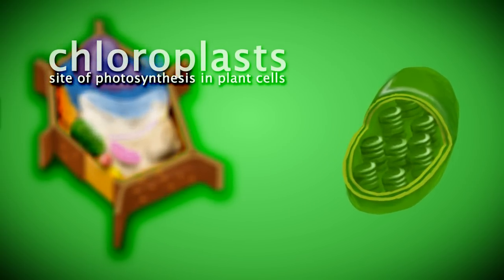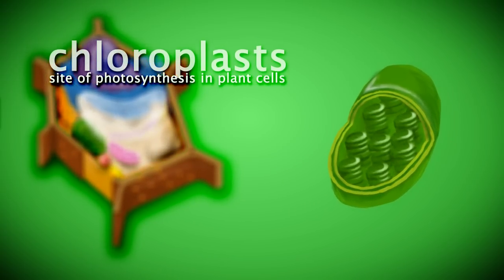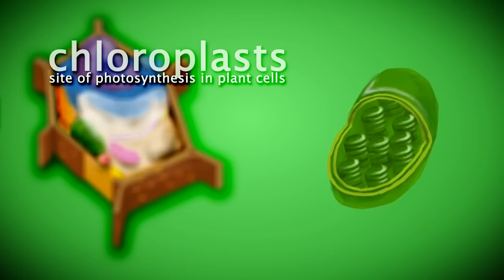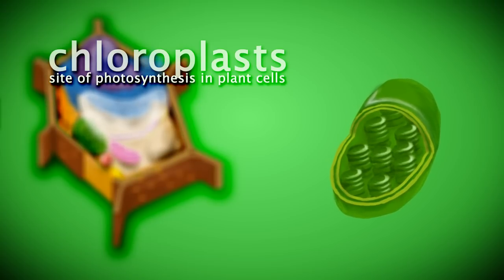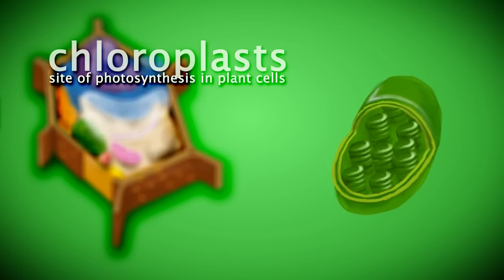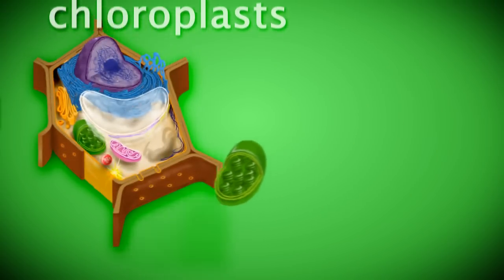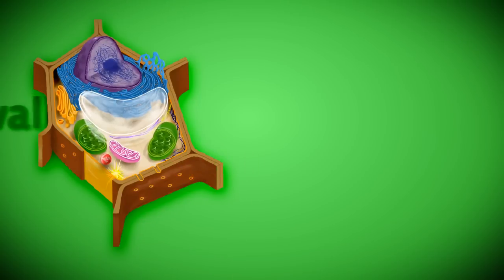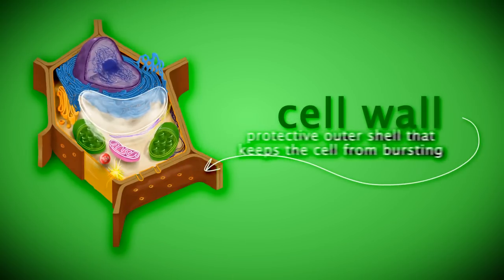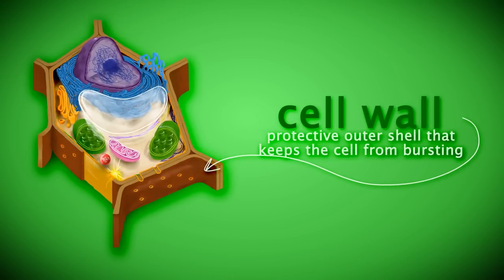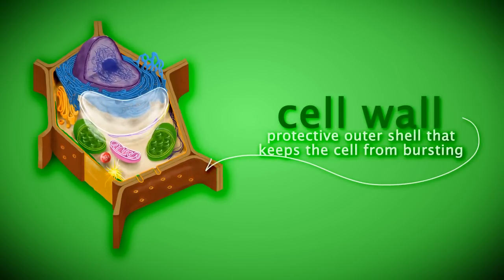Chloroplasts convert solar energy and carbon dioxide to chemical energy. They also contain chlorophyll, which captures light pigments, giving the plant cell its green color. The cell wall is a strong protective secondary layer that provides structure for the plant cell.